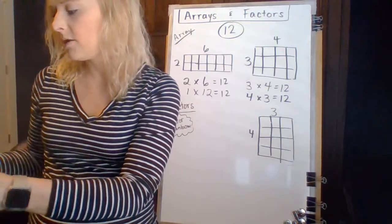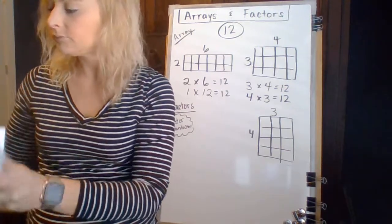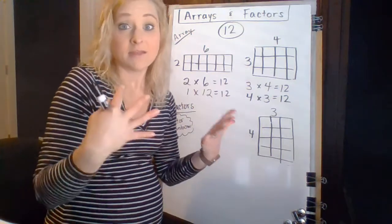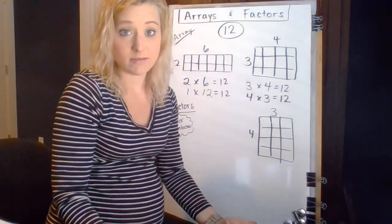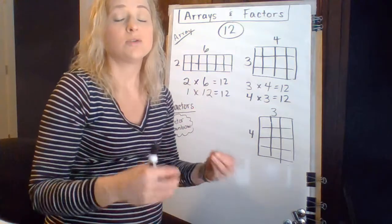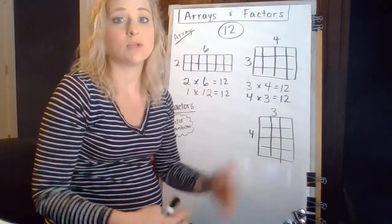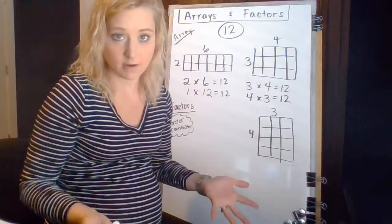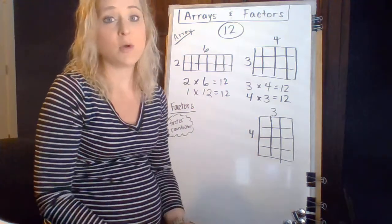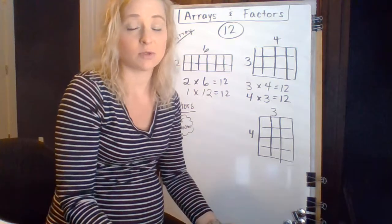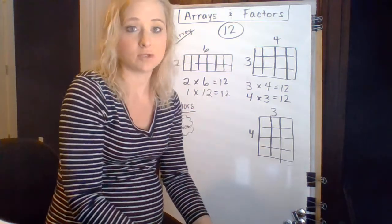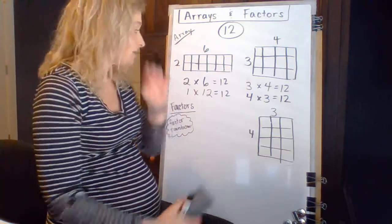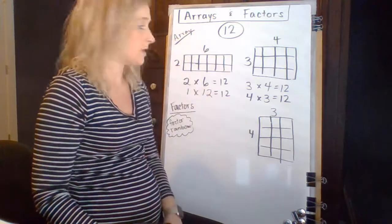We can flip that around and have 4 rows of 3, and that's still 12 squares inside. 3, 6, 9, 12. So it doesn't matter which way the factors go. When they get multiplied, you get the same product. So those are some possibilities there. On that first problem, you were also asked to give the division facts that go with it. I really want you to really make a connection between multiplication and division, how they help you solve one another. If you know your multiplication facts really well, and you have a good understanding of multiplication, division becomes a lot simpler.